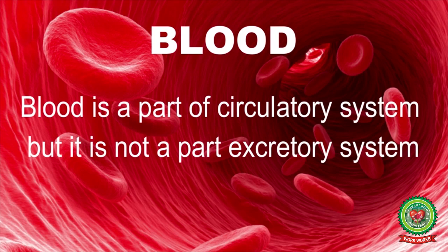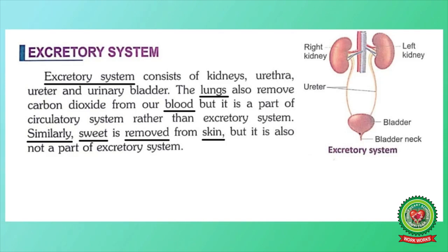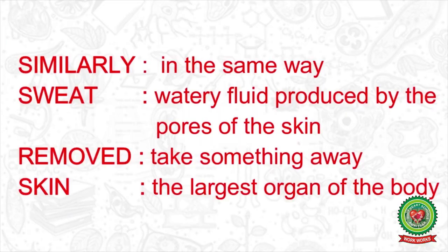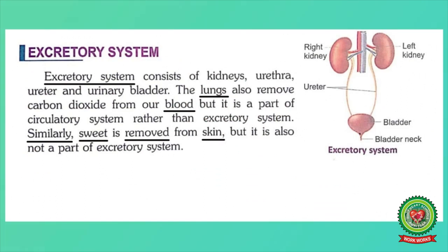Underline the word 'blood.' Blood is part of the circulatory system but is not part of the excretory system. Similarly, sweat is removed from the skin. Underline 'similarly' — meaning: in the same way. Underline 'sweat' — meaning: watery fluid produced by the pores of the skin. Underline 'skin' — meaning: the largest organ of the body. Our skin also helps in removal of watery fluid but is not part of the excretory system.